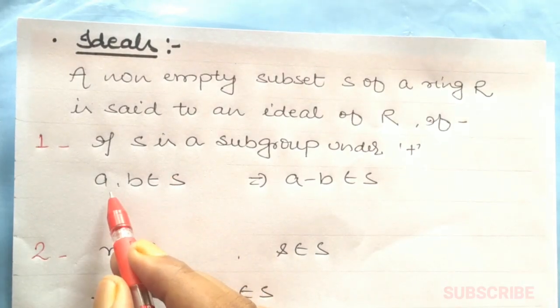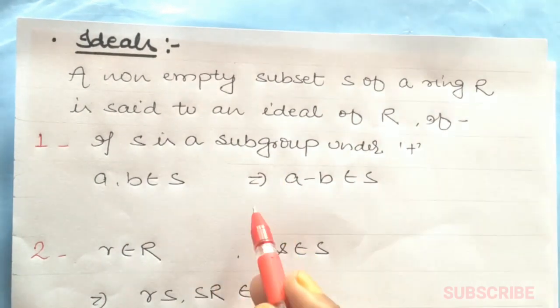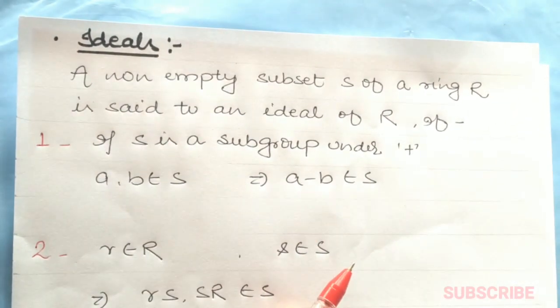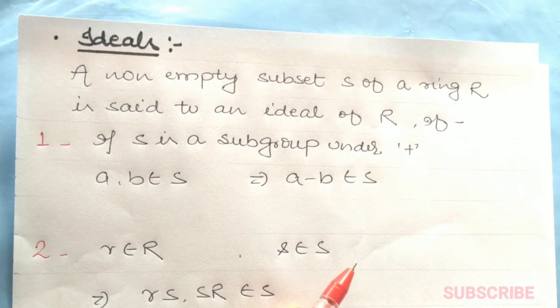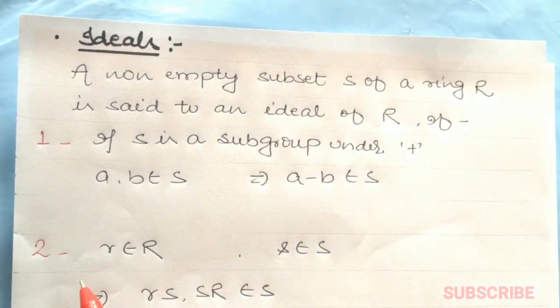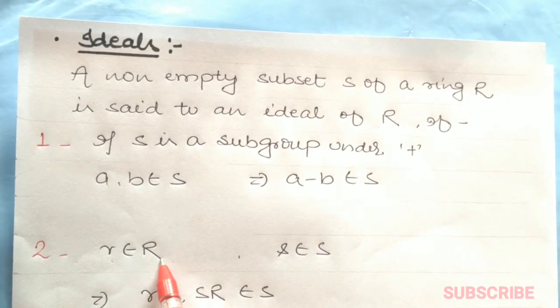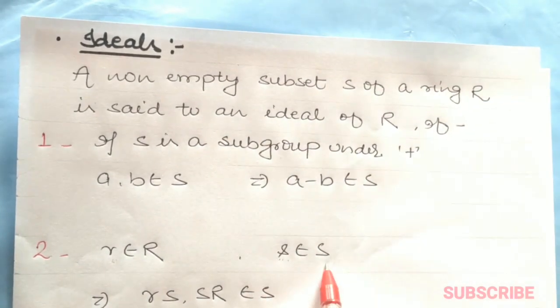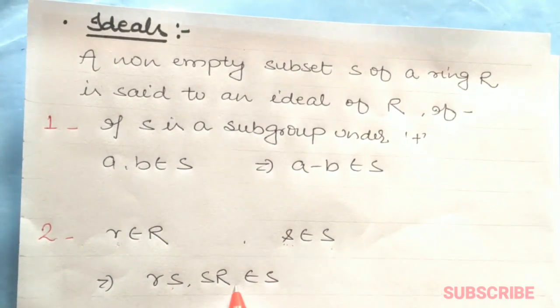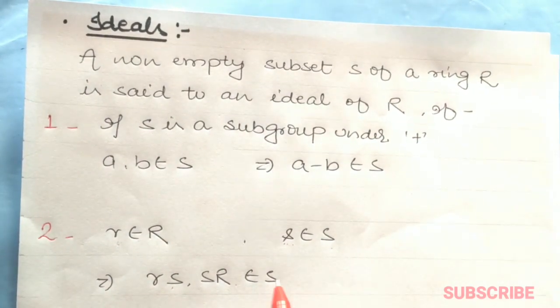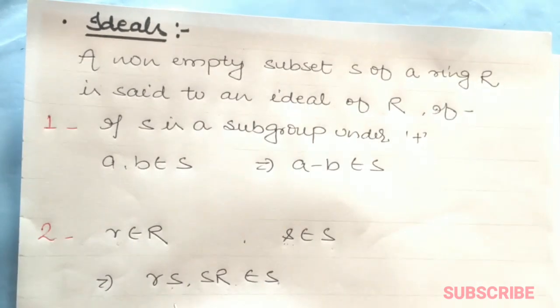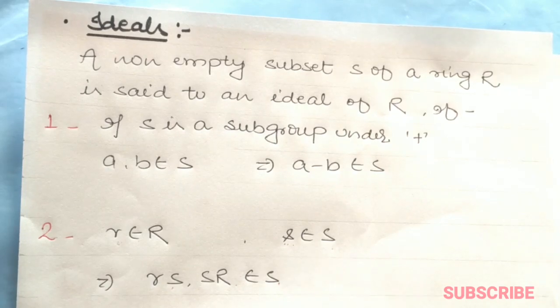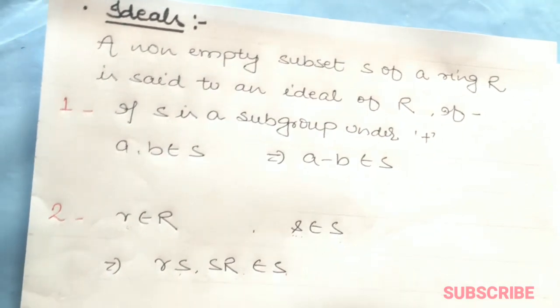If a, b belong to S, then a minus b belongs to S. The other property: if the element r belongs to the ring R and s belongs to S, then rs or sr belongs to S. If both properties are held, then we say ideals. There are two types: left ideal or right ideal.